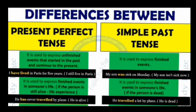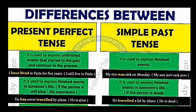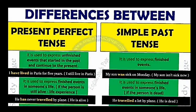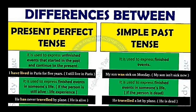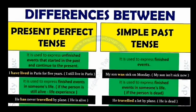Second देखते हैं — it is used to express finished events in someone's life. इसका use बताने के लिए हम लोग Present Perfect tense का use करेंगे। और अगर वो person मर चुका है, तो उसके experience को बताने के लिए हम लोग Simple Past का use करेंगे। यानि कि वो बहुत travel करता था plane से — तो 'करता था' से मतलब है अब वो हमारे बीच नहीं है, तो इसके लिए Simple Past tense का use करेंगे।